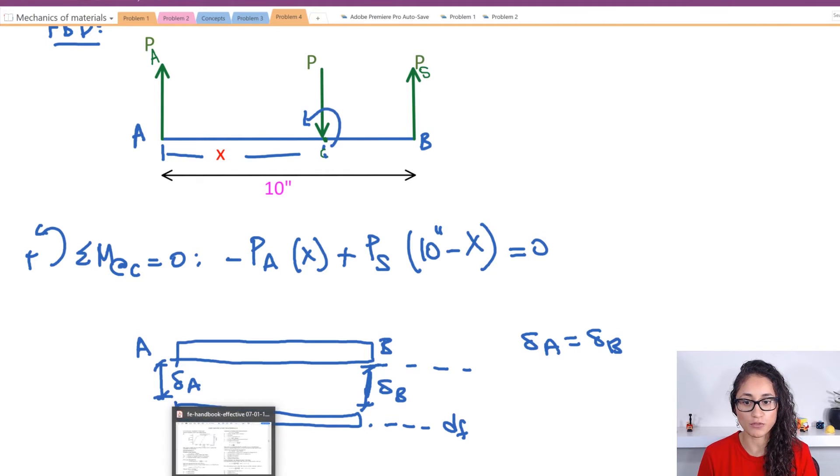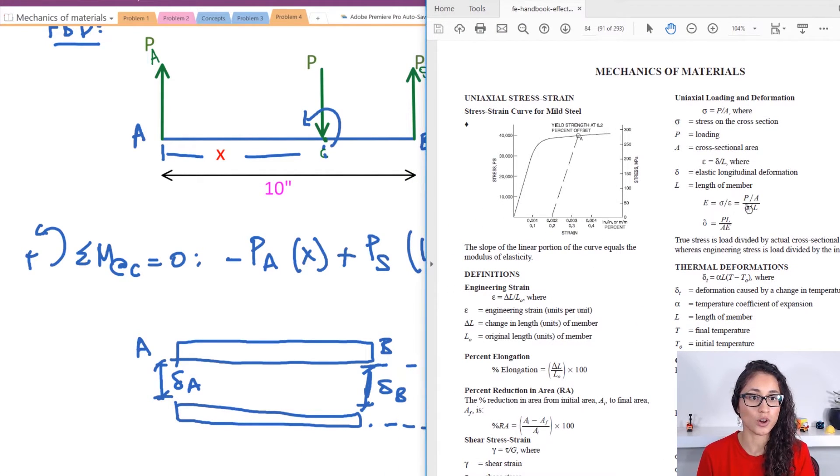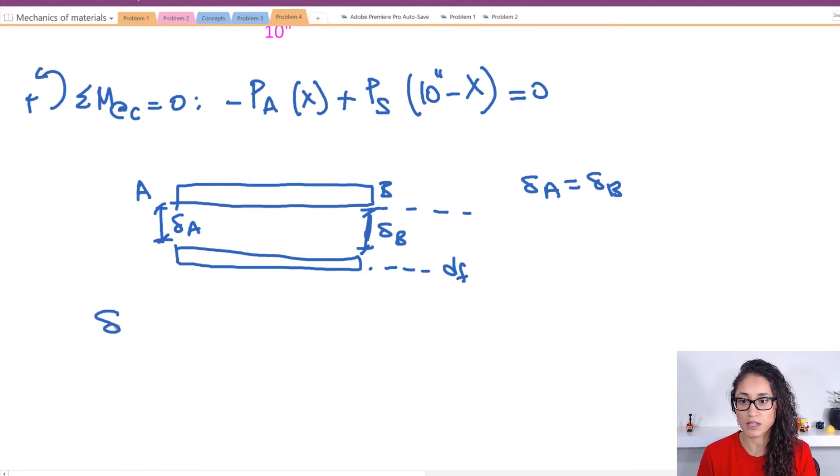Now if you go to the reference manual you are given the displacement equation right here which is on page 84. So I have PL over AE. So let's write that equation down. Displacement at A is equal to the displacement at B.